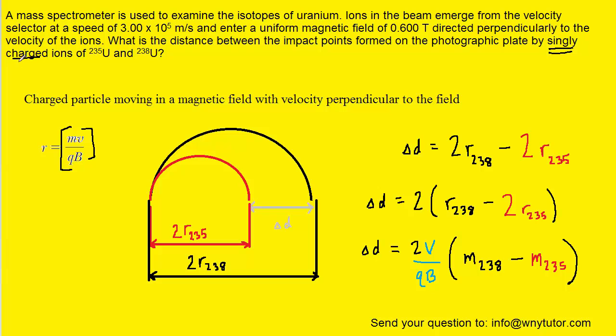Q is known because they said that the particles are singly ionized, or in fact, singly charged. And so, that means that the charge on each particle is going to be the standard value of the elementary charge, 1.6 times 10 to the minus 19th Coulombs.